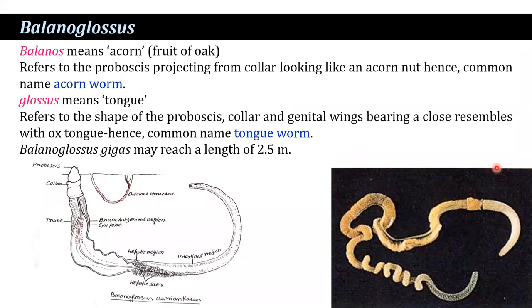The name Balanoglossus comes from the Greek word 'balano', meaning acorn — the fruit of oak — referring to the proboscis projecting from the collar that looks like an acorn nut. Hence the common name is acorn worm.